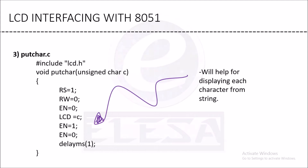In the putchar function, we send a character C, which is received as unsigned character C. Then rs equal to 1, rw equal to 0, en equal to 0 selects the data register, and LCD equal to C writes the data on screen. Then re-enabling and disabling the enable signal completes the write to screen.